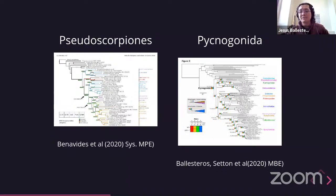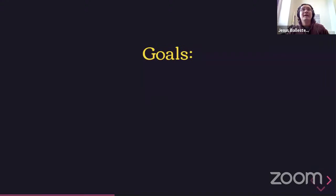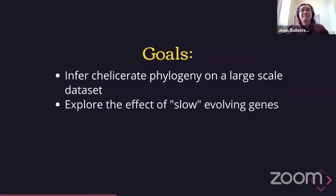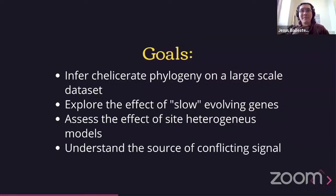My goals for this talk are to infer a phylogeny on a large-scale dataset; explore the effect of slow-evolving genes that are supposed to be key to obtaining monophyletic Arachnida; assess the effect of site-heterogeneous models, which in conjunction with slow-evolving sites are supposed to resolve the controversy; and more importantly, to understand the source of conflicting signal and how it affects phylogenetic inference — not only of chelicerates, but of other recalcitrant nodes in the tree of life.